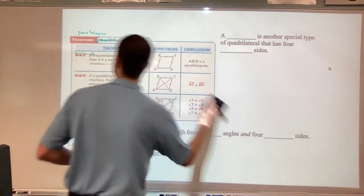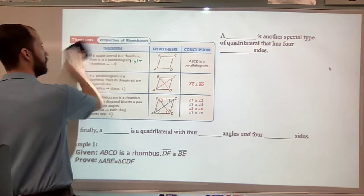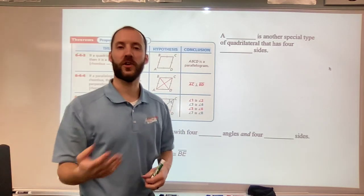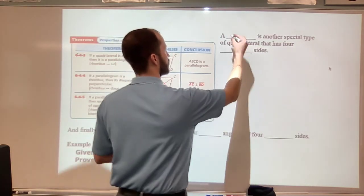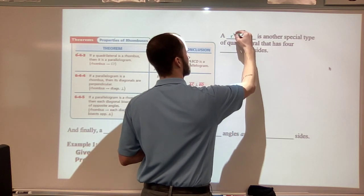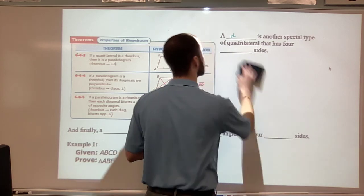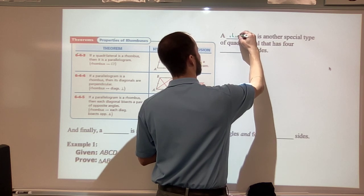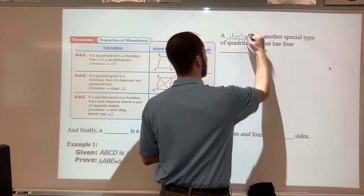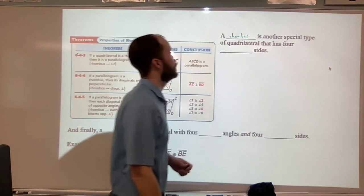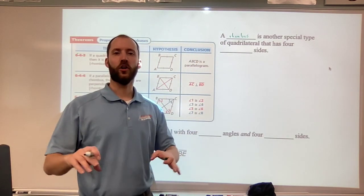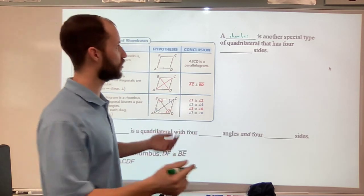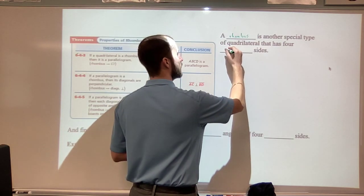So another type of special parallelogram, or go back one step further, a special quadrilateral, is a rhombus. That's a horrible H. Try that again. That's better, not really, but better. So a rhombus, you want to really hit the H, rhombus, okay? So a rhombus is another special type of quadrilateral and has four congruent sides.